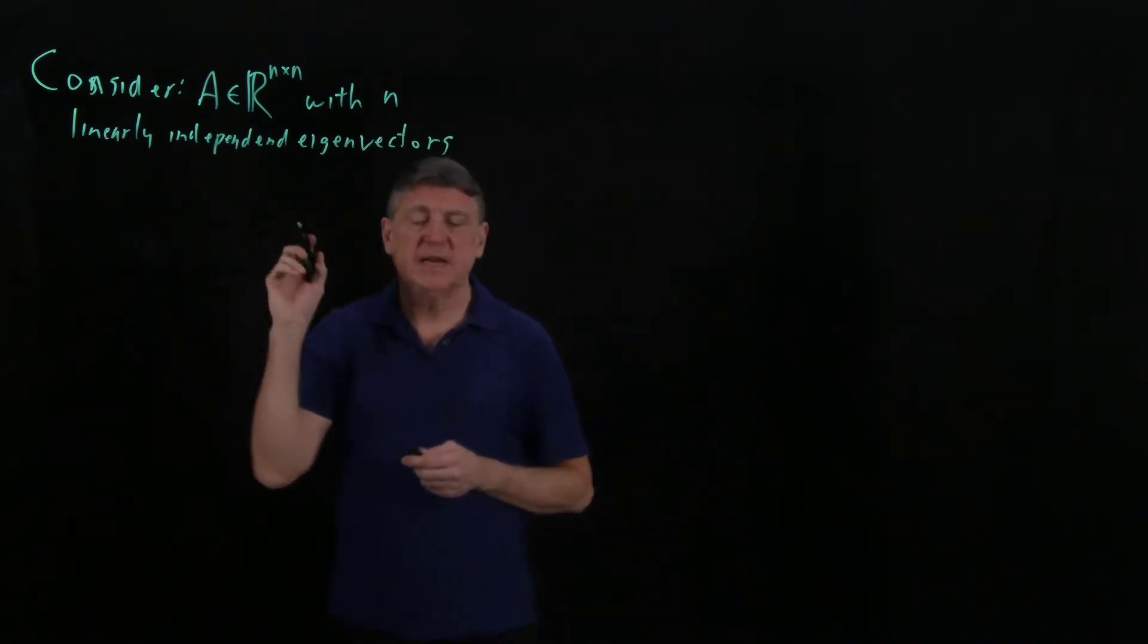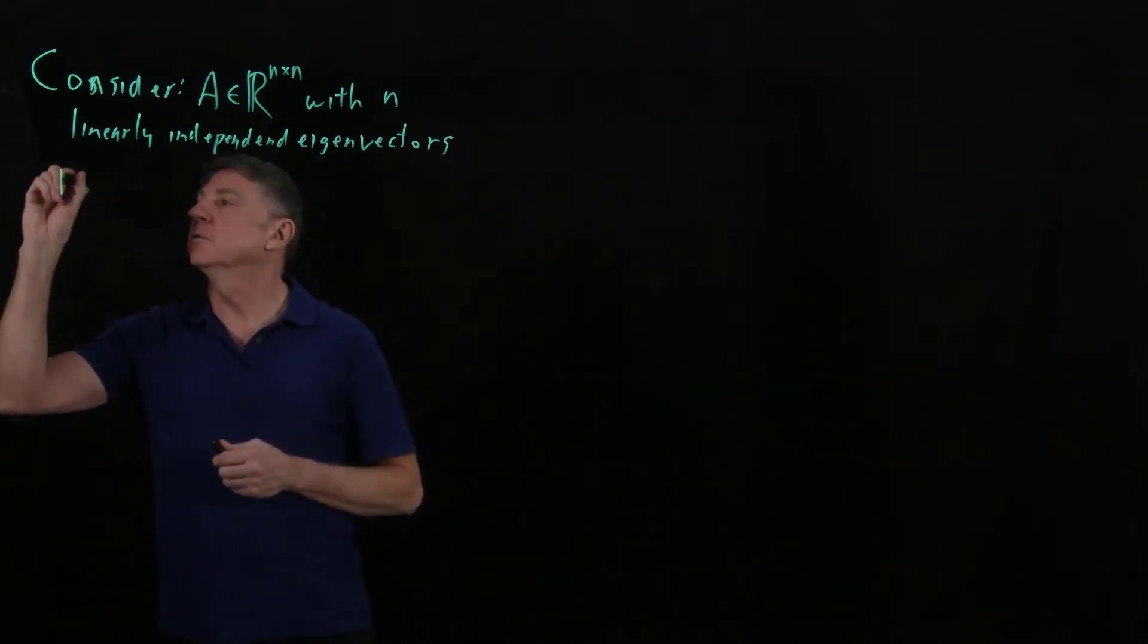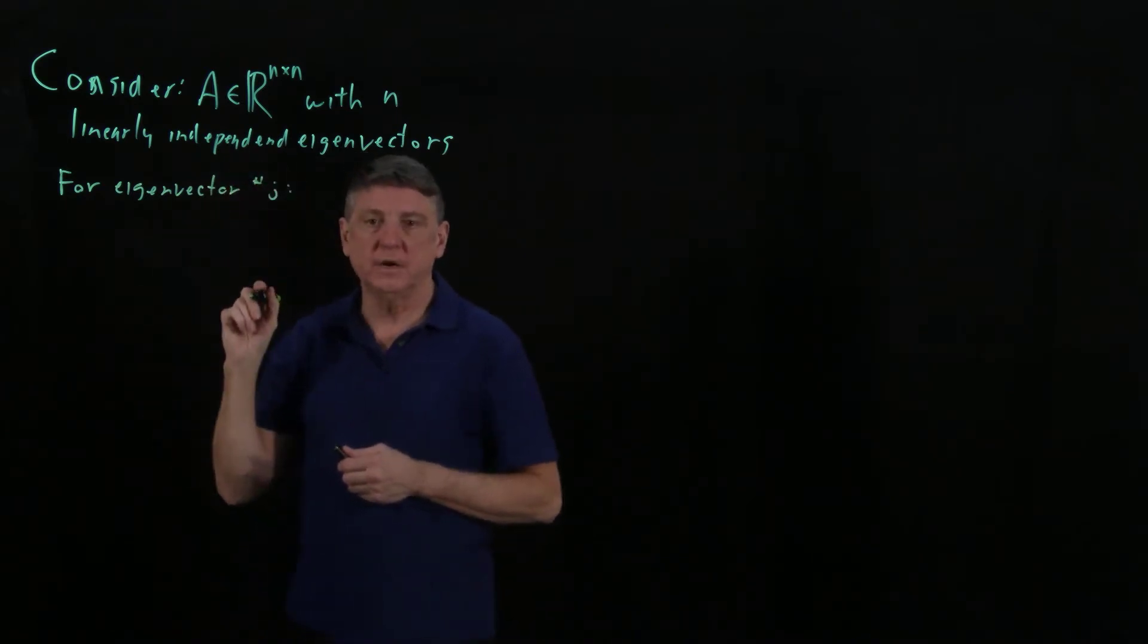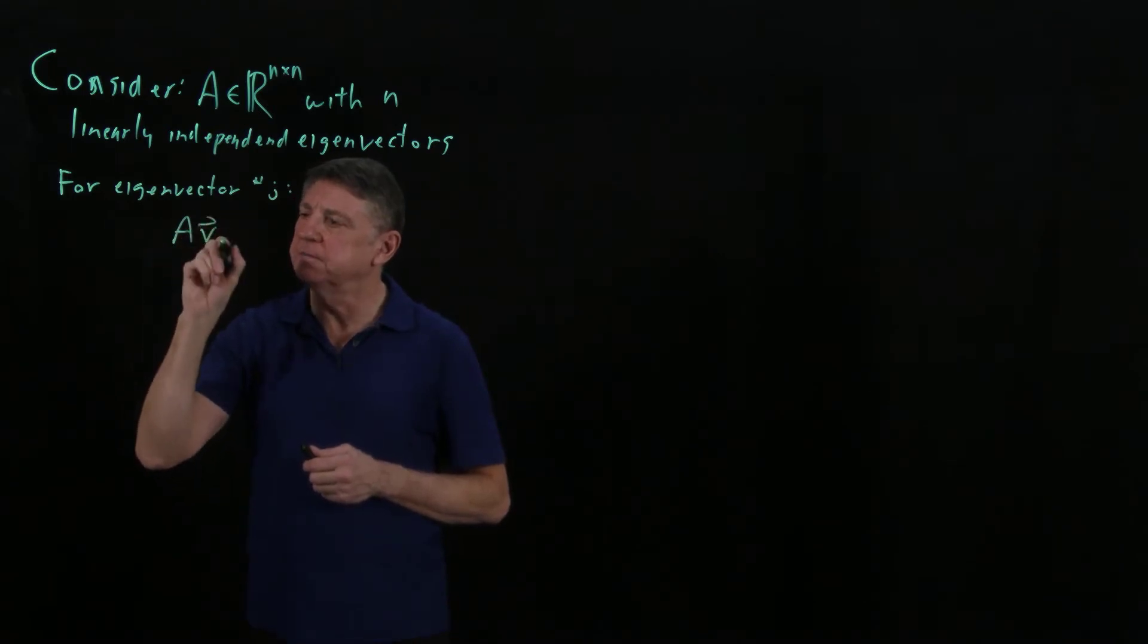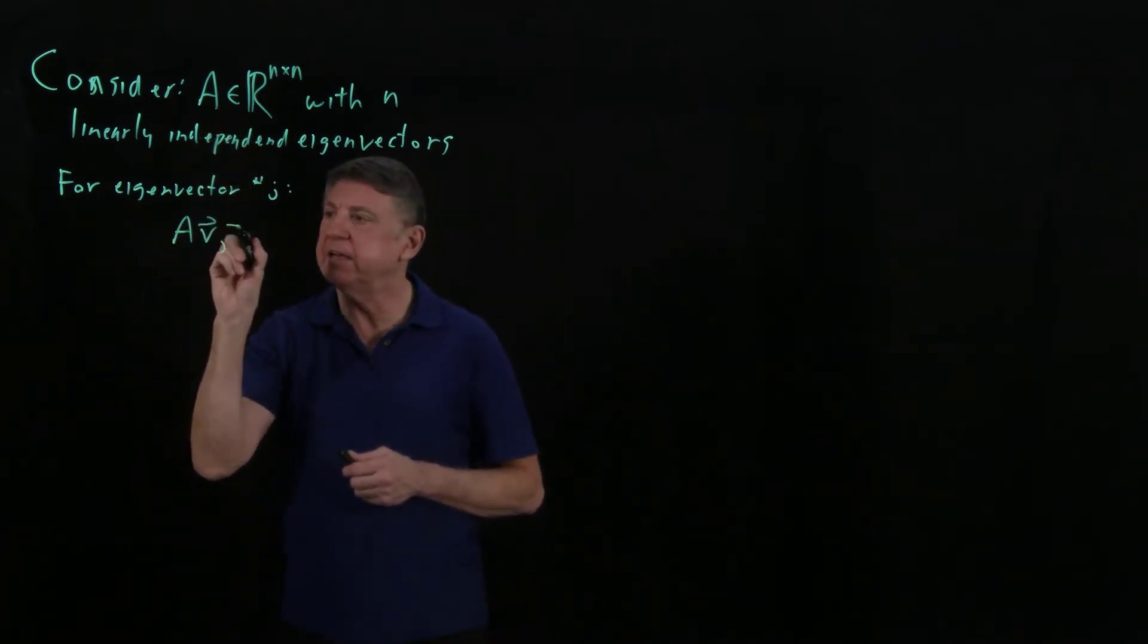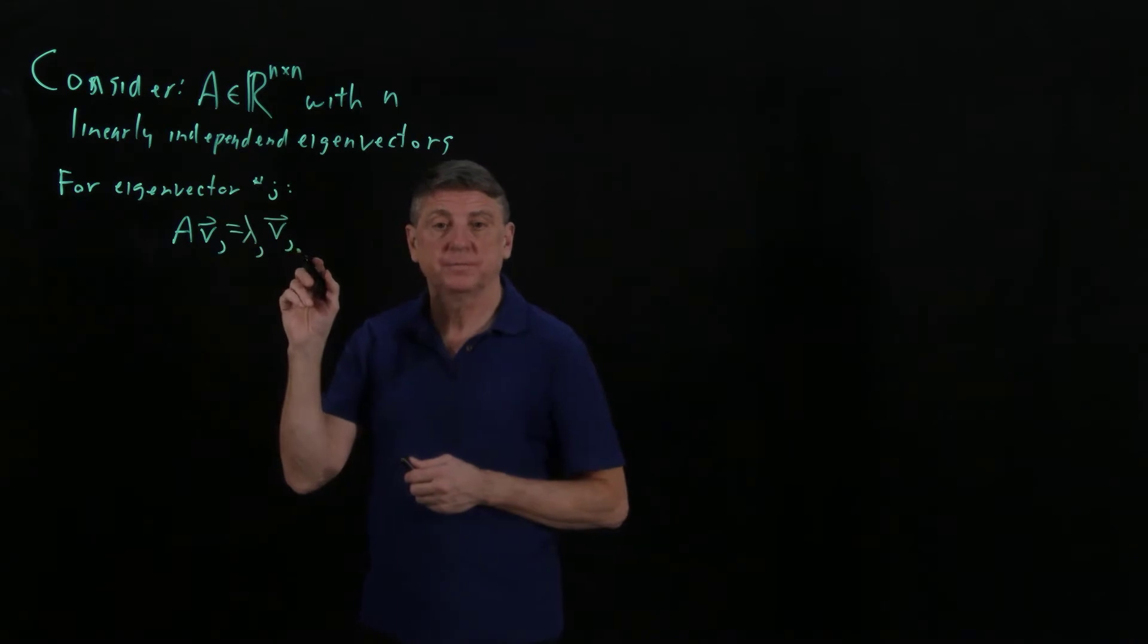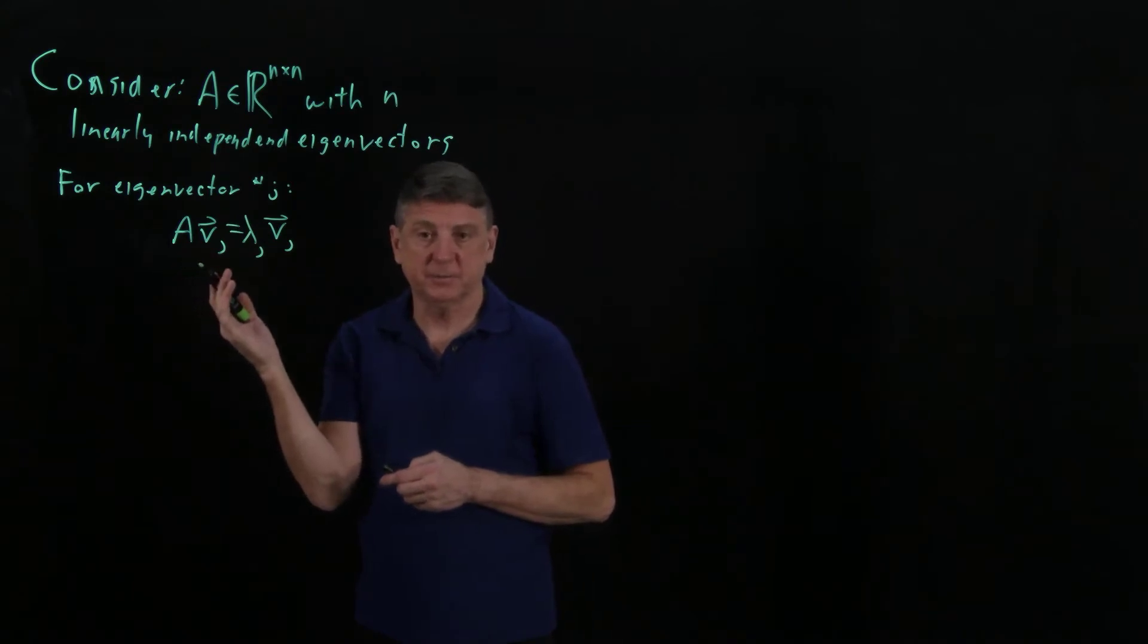So for this matrix, now let's concentrate on the j-th eigenvector. For eigenvector number j, what we know is that if we take this eigenvector and we pre-multiply the eigenvector by the matrix A, that equals the eigenvector j multiplied by a scalar, and that is the eigenvalue. This is an equation that we've come across many times in prerequisite material.